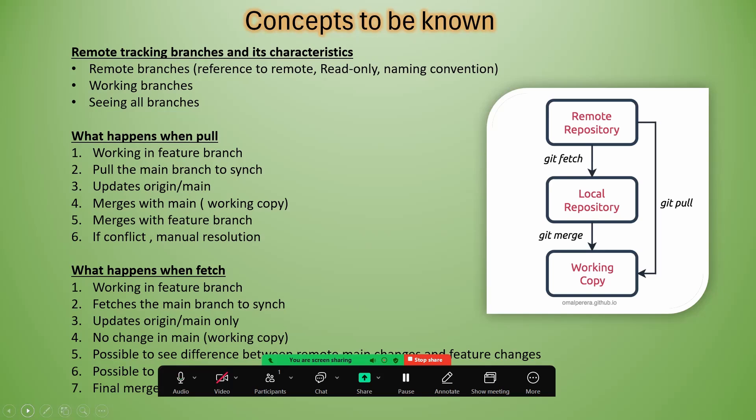We'll see how to view all these branches. To recap the previous video on git merge: we work in the feature branch after cloning, create the feature branch, start working, then pull the main branch to sync into our feature branch. When you use pull, it first updates origin/main, then merges with the local main working copy, then also merges with your feature branch. If there are any changes on the same lines, you will get a conflict.